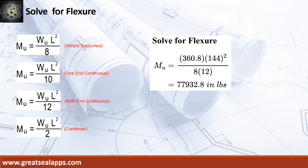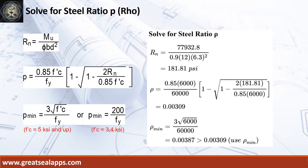Given factored load equals 360.8 pounds per foot, and L equals 12 feet. The maximum moment is 77,932.8 inch-pounds. Given maximum moment equals 77,932.8 inch-pounds, resistance factor equals 0.9, b equals 12 inches, and d equals 6.3 inches.